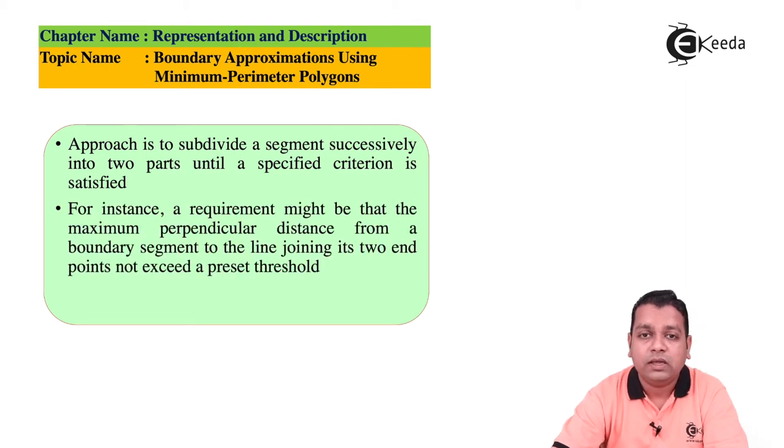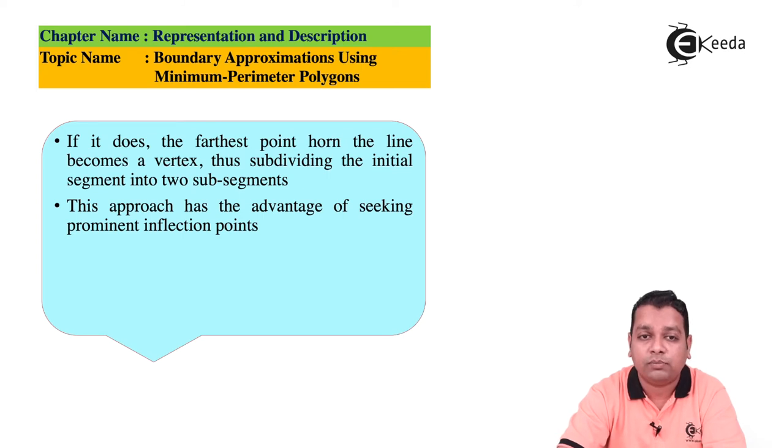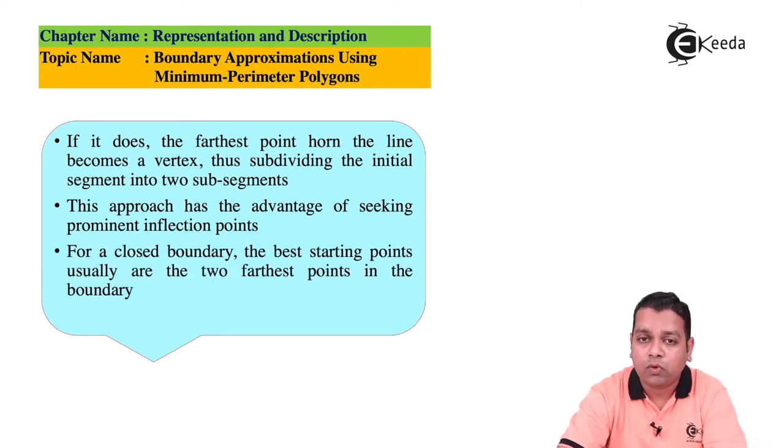For instance, a requirement might be that the maximum perpendicular distance from a boundary segment to the line joining its two endpoints does not exceed a preset threshold. If it does, the farthest point becomes a vertex, subdividing the segment into two sub-segments. This approach offers the advantage of seeking prominent inflection points. For a closed boundary, the best starting points are usually the two farthest points in the boundary.